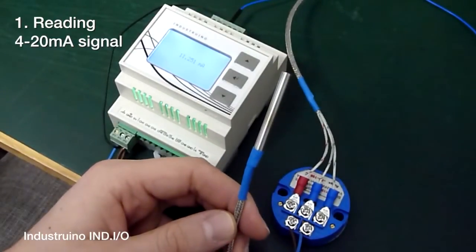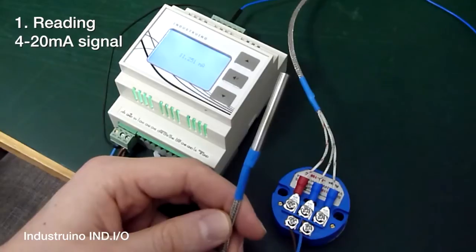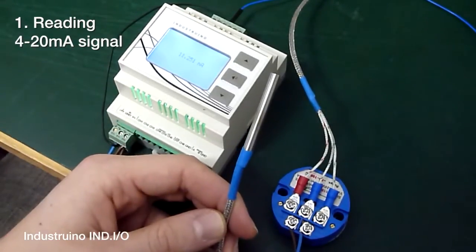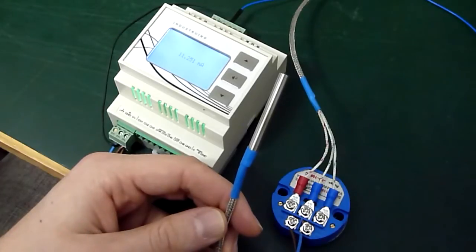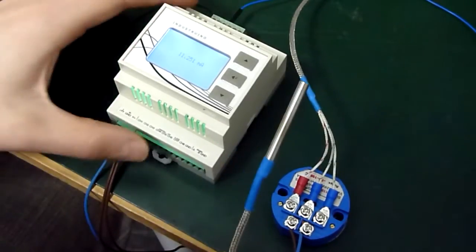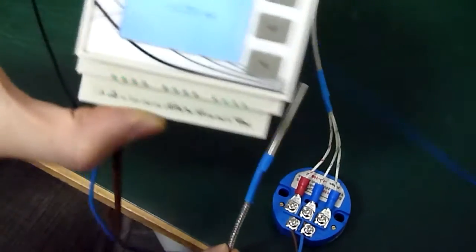What we have here is a PT100 temperature sensor which is connected to a 4-20mA transmitter. The 4-20mA transmitter is connected to the Industrino's analog input. And we've written a small sketch to display the current values on the screen.